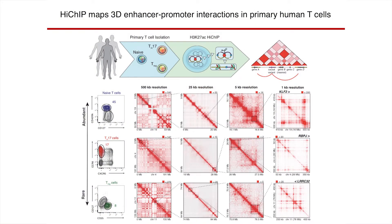Having established low cell input capability, we moved to primary human immune cells, focusing on cell types particularly relevant for autoimmune disease: CD4-positive T cell subsets. From a single blood draw from three healthy donors, we purified naive CD4 T cells, T-helper 17 cells — the inflammatory CD4 T cell — and T-regulatory cells, then performed Hi-ChIP. We get beautiful enhancer-promoter interaction plots on chromosome 19, from a high-level view showing chromatin domains down to individual enhancer-promoter interactions.